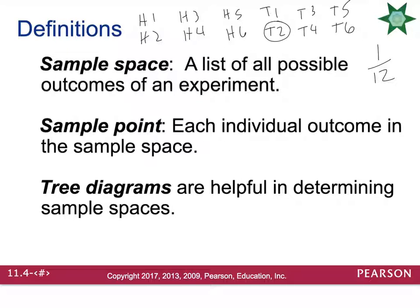Tree diagrams are sometimes helpful in order to create the sample space. You can organize what will happen in experiment 1 — either a head or a tail — and then organize what's going to happen in experiment 2, where there are 6 possible ways the die could land, and that will help you generate the sample space.